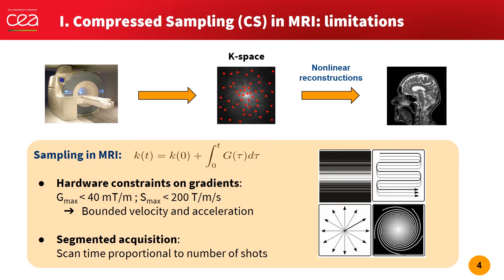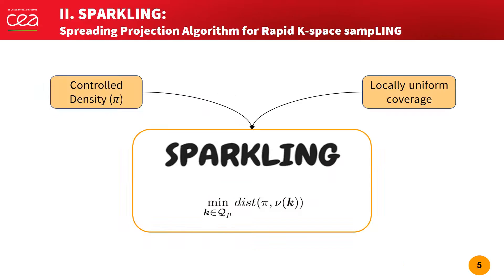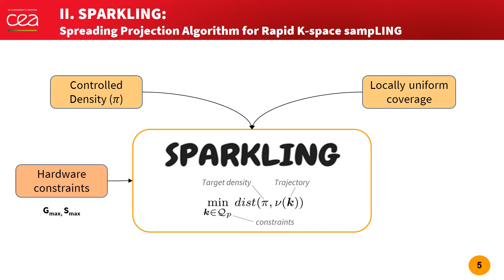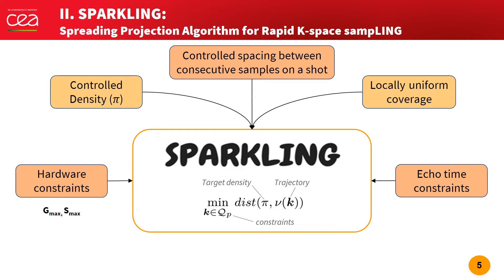This is why we introduced a completely new approach to the design of non-Cartesian k-space trajectories. Our method is named SPARKLING, which stands for Spreading Projection Algorithm for Rapid K-Space Sampling. SPARKLING is an algorithm that seeks to minimize the distance between a target density π and a k-space trajectory k, under constraints q and p. These constraints are typically the gradient hardware constraints, the echo time, but we also want to control the distance between consecutive samples on a shot. Finally, we use a high sampling rate to maximize sampling efficiency.